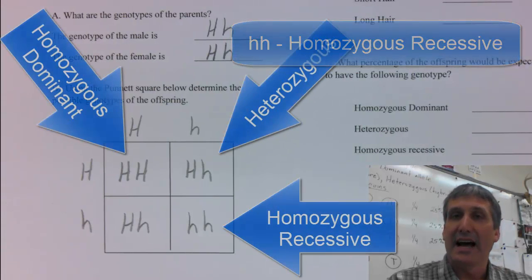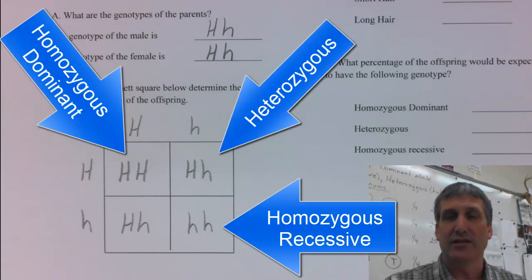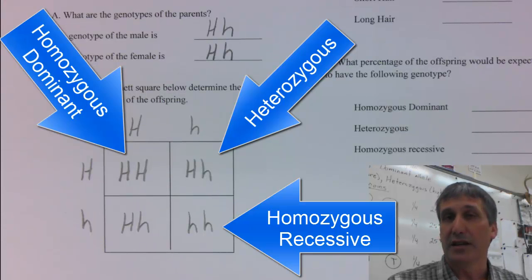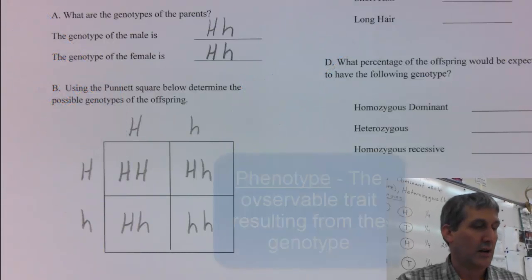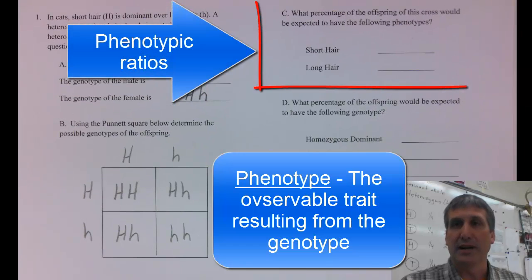Now you have all the information you need to determine the phenotypic ratios and the genotypic ratios of the offspring for this particular cross. So let's look at the phenotypic ratios first.